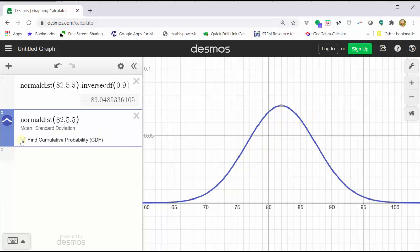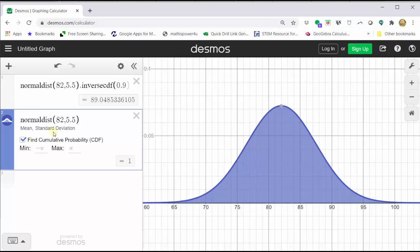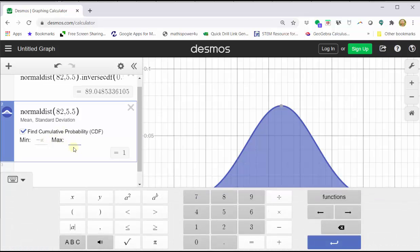Next, we click find cumulative probability. And now let's verify the area to the left of this test score is 0.9, verifying it is the 90th percentile. To do this, leave the minimum at negative infinity and change the max to the test score of 89.05.